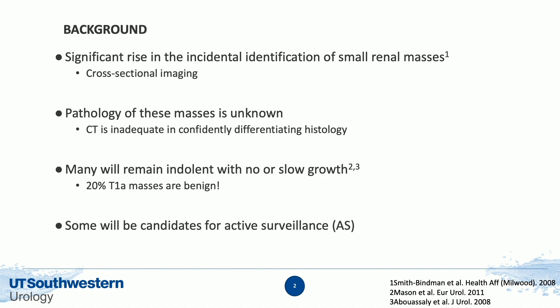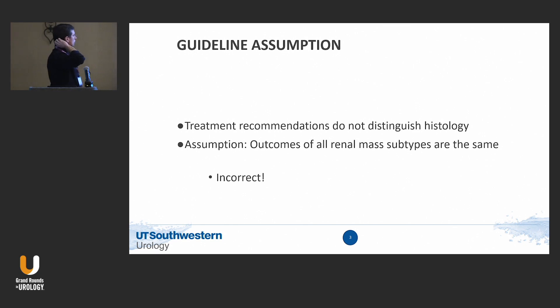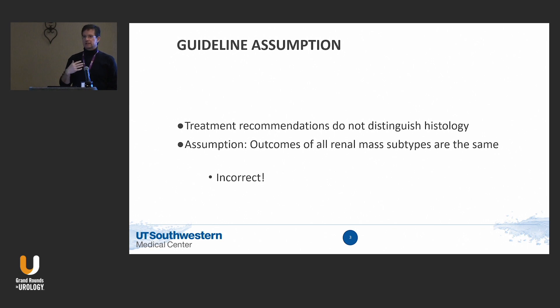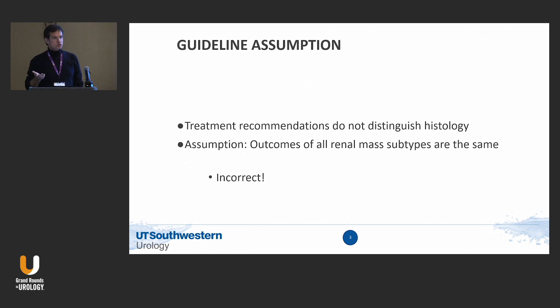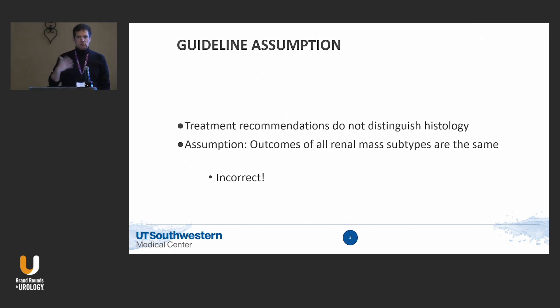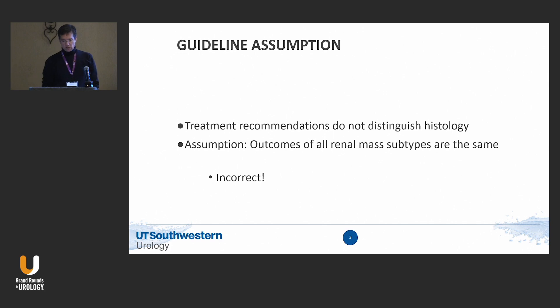We know that many of these masses are indolent. Twenty percent we know are benign, so many are candidates for active surveillance. We need to figure out the appropriate way to recommend and manage these patients. The guidelines really don't distinguish in any detail how we should evaluate small renal masses and recommend treatments distinguishing by histology. The assumption is that T1As are all treated alike, and we know that's not the case anymore — it's incorrect.